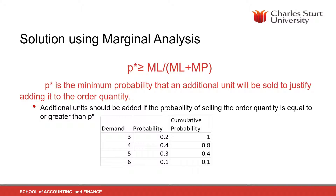So P star has got to be greater than or equal to $40 divided by $100. So P star is going to be greater than or equal to 0.4. So how do we use this 0.4?